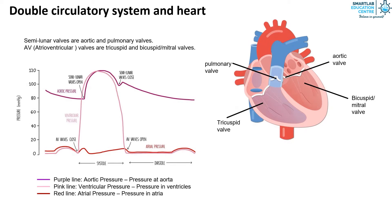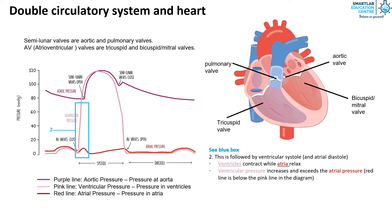In the second stage of the cardiac cycle, it is the ventricular systole and atrial diastole. The ventricles now contract while the atria relax, causing ventricular pressure to increase and exceed the atrial pressure — the pink line is now much higher than the red line. This difference in pressure causes the tricuspid and bicuspid valves, collectively known as the AV valves, to close, preventing blood in the ventricles from flowing back into the atria. The closing of the AV valves makes the first heart sound, 'lub'.